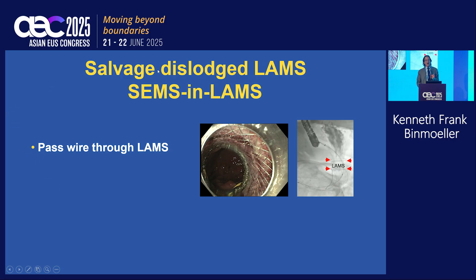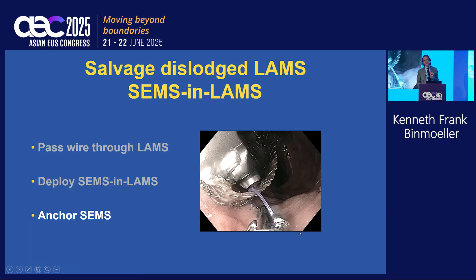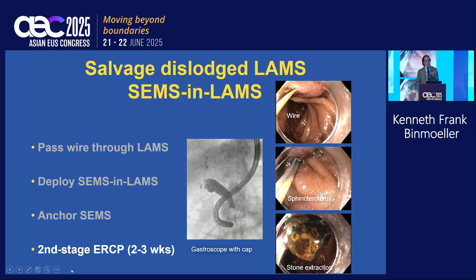We can salvage a dislodged LAMS using a SEMS. The key is to pass a wire through the LAMS, then deploy the SEMS through the LAMS — SEMS in LAMS. Anchor the SEMS — you should really suture this in. Then you can perform a second-step ERCP in two to three weeks. Do not force your scope through your SEMS even if you have sutured it in place.